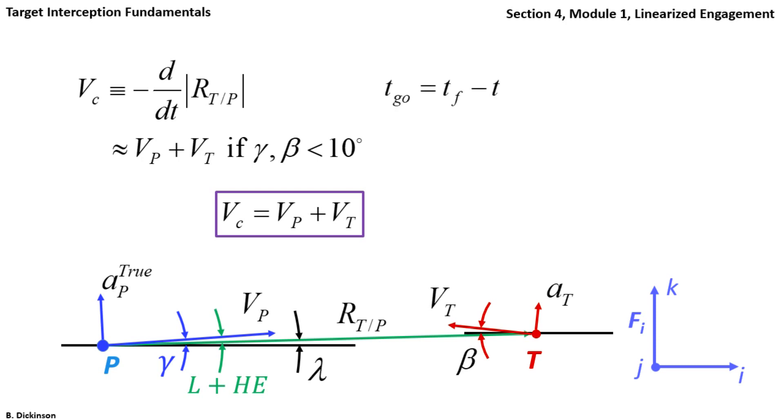Another important variable is time to go, which is the final time minus the current time. In linearized engagements, final time is a user-specified variable. As the current time approaches the final time of the engagement where the missed distance would be recorded, time to go approaches zero.